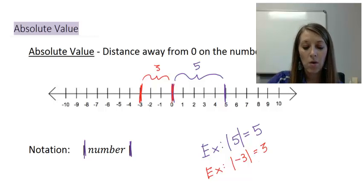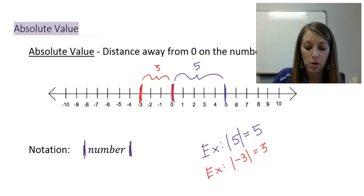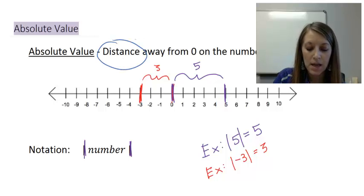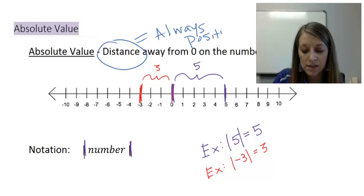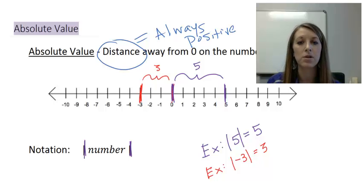The important thing to know about absolute value — and more importantly about distance — is that distance is always positive. Basically, what absolute value does is take all those numbers and turn them into positive numbers.